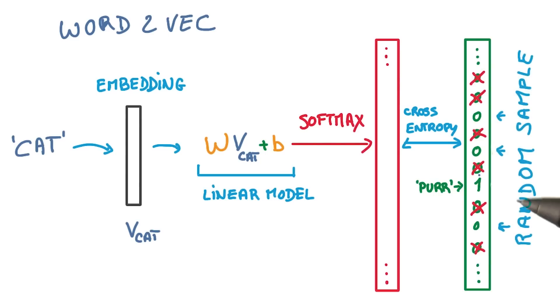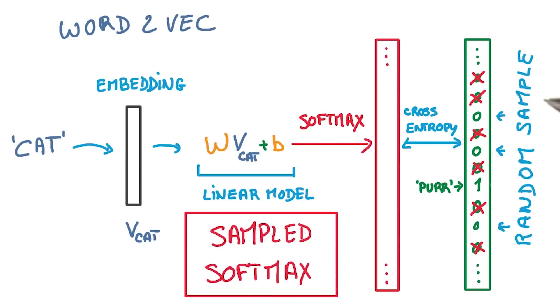But you can use a trick. Instead of training the softmax as if the label had probability 1, and every other word had probability 0, you can sample the words that are not the target, pick only a handful of them, and act as if the other words were not there. This idea of sampling the negative targets for each example is often called sampled softmax, and it makes things faster at no cost in performance.